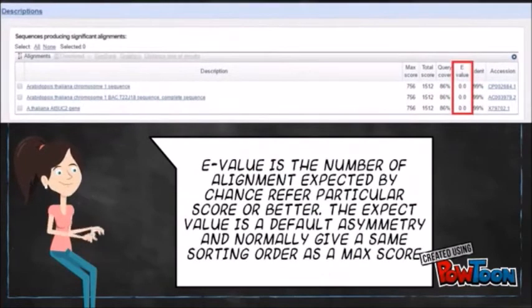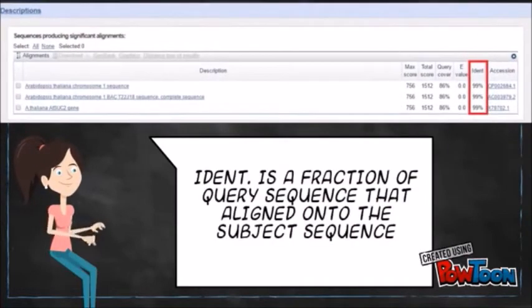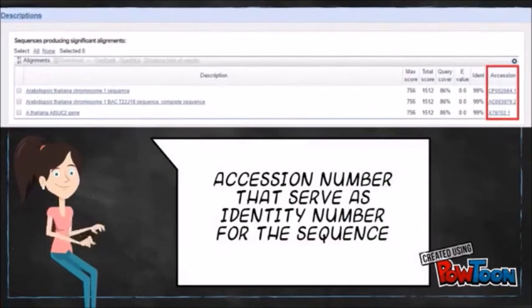While the e-value is the number of alignments expected by chance with a particular score or better. The expect value is the default sort metric and normally gives the same sorting order as max score. Ident is the fraction of the query sequence that aligns to the subject sequence. And the most right column is the accession number that serves as an identity number for a sequence.